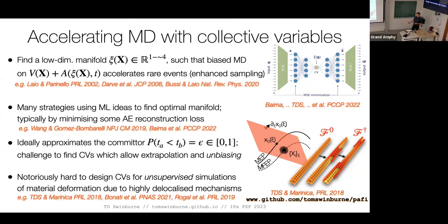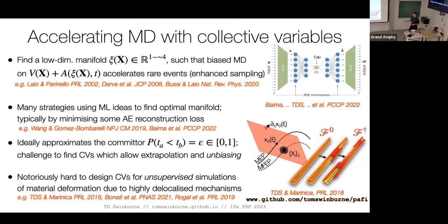We've done work with Cosmin looking at dislocations, nucleation, and grain boundary migration. In some specialized geometries with a restricted range of mechanisms, you can get a handle on the mechanisms and build collective variables. We developed a scheme relating the minimum energy path to a nearby minimum free energy pathway, using this minimum energy path as our collective variable. But in general, it's very hard to do this dimensionality reduction, and therefore everything after it is also hard.